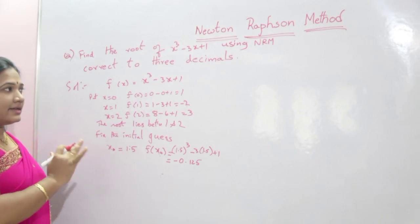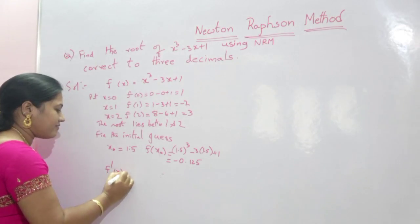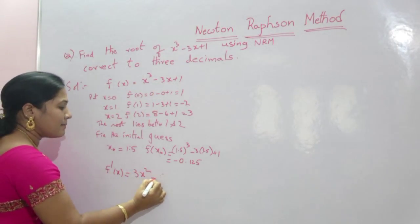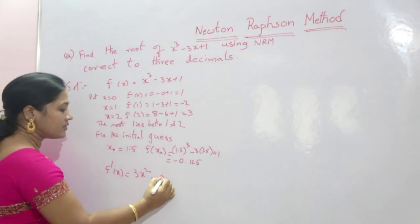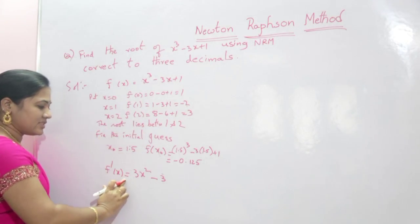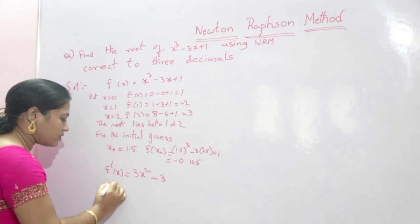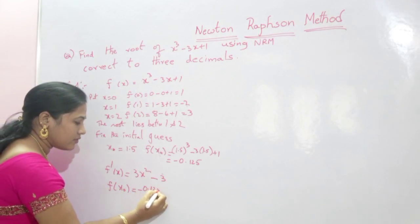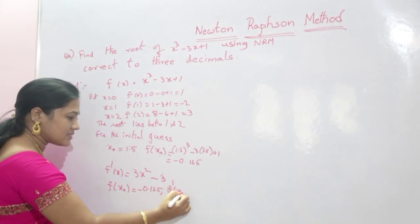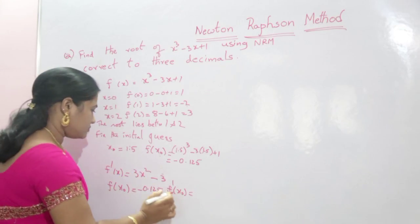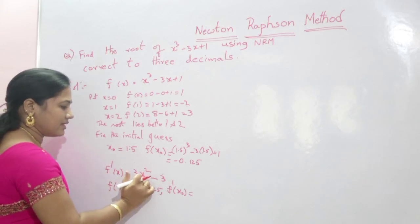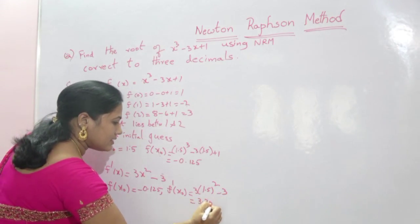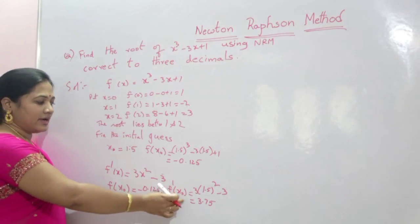Find the derivative of the given function. f'(x) = 3x² − 3 (since the derivative of x³ is 3x², derivative of −3x is −3, and derivative of 1 is 0). We already have f(x₀) = −0.125. Find f'(x₀): substitute x₀ = 1.5 — 3(1.5)² − 3 = 3.75. These are the f(x₀) and f'(x₀) values.